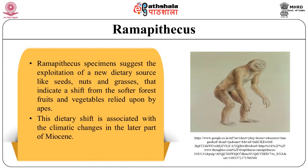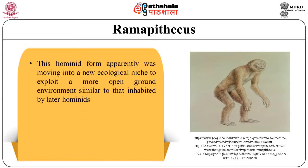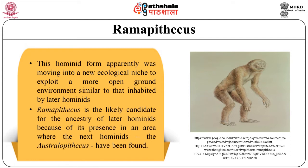There is a greater probability that this hominid form was moving into a new ecological niche. It was beginning to exploit a more open ground environment similar to that inhabited by later hominids. Ramapithecus is also the most likely candidate for the ancestry of later hominids because of its presence in an area where the next hominids — that is, Australopithecus — have been found.